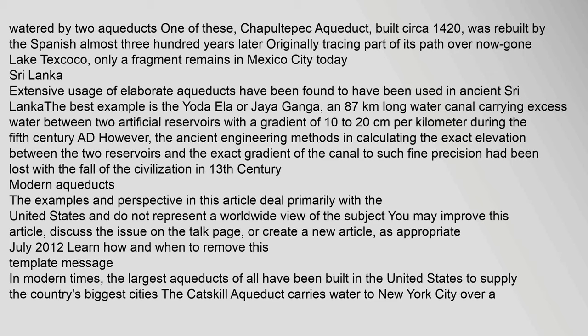Extensive usage of elaborate aqueducts has been found in ancient Sri Lanka. The best example is the Yodha Ela, or Jaya Ganga, an 87 km long water canal carrying excess water between two artificial reservoirs with a gradient of 10 to 20 cm per km, during the 5th century AD. However, the ancient engineering methods for calculating the exact elevation and gradient to such fine precision were lost with the fall of the civilization in the 13th century.